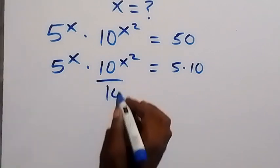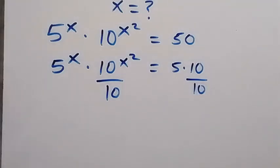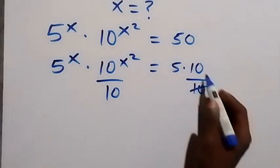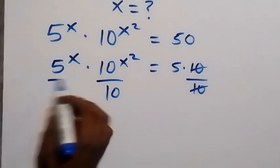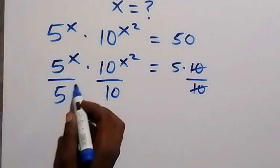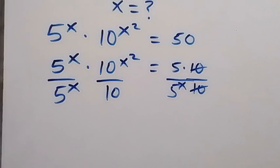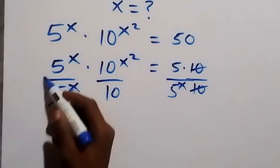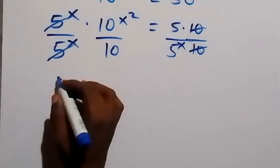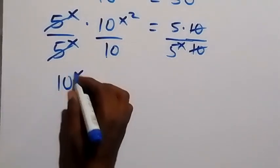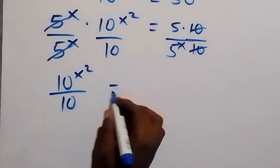In the next step we divide both sides by 10 — divide this side by 10 and also divide this side by 10, and the 10s cancel each other. Also divide both sides by 5 raised to power x, and 5 raised to power x cancels out. What we have left is 10 raised to power x squared over 10, equals 5 over 5 raised to power x.